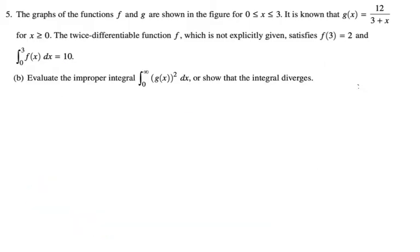Evaluate the improper integral from 0 to infinity of g of x squared dx, or show that the integral diverges. So let's just write it down. So 0 to infinity, g of x squared dx is going to be. So we have to change that upper bound to some kind of a parameter or a dummy variable. I'm going to use b because it's the upper bound, and take the limit as b approaches infinity.